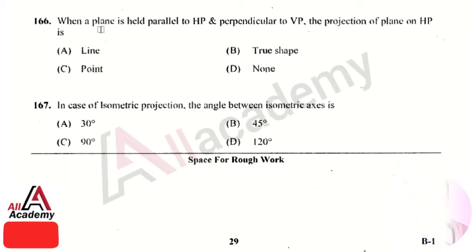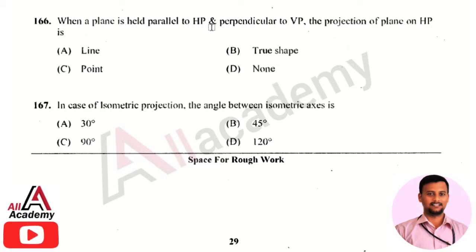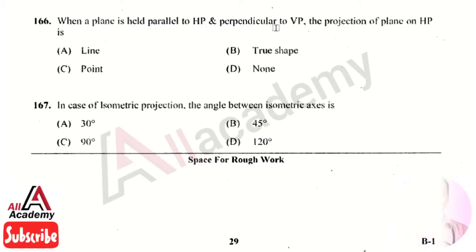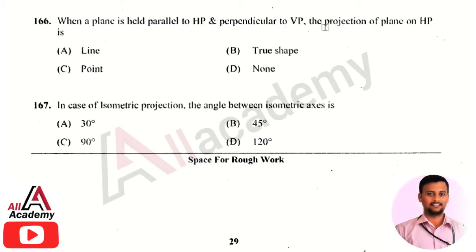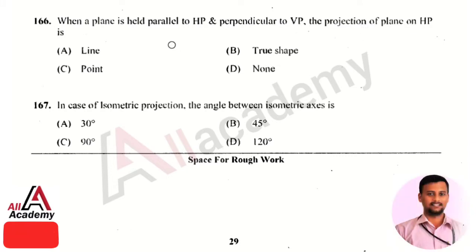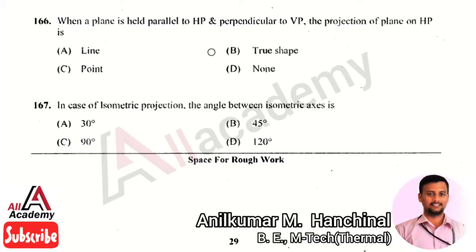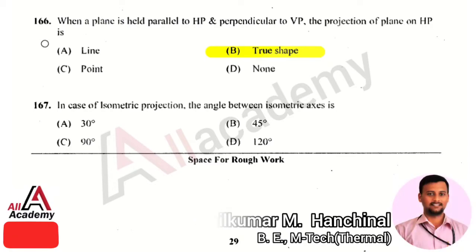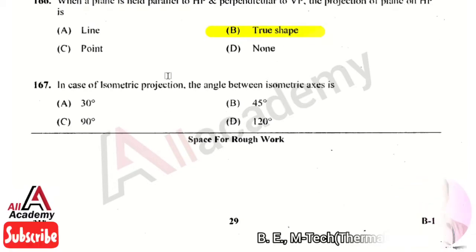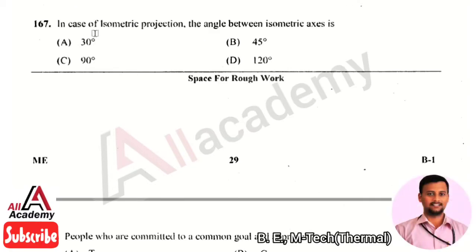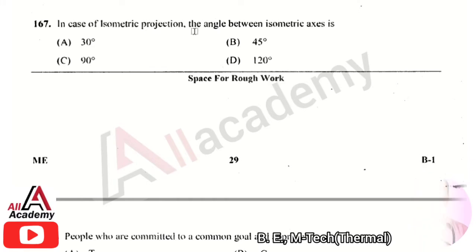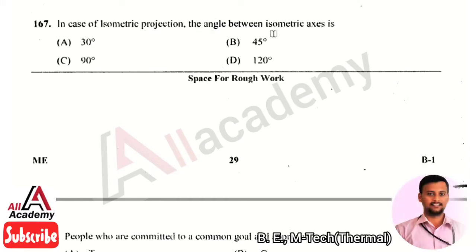The next question is: when a plane is held parallel to HP and perpendicular to VP, the projection of the plane on HP is? The right answer is option 2 — it is a true shape. So the projection of the plane on HP gives a true shape.